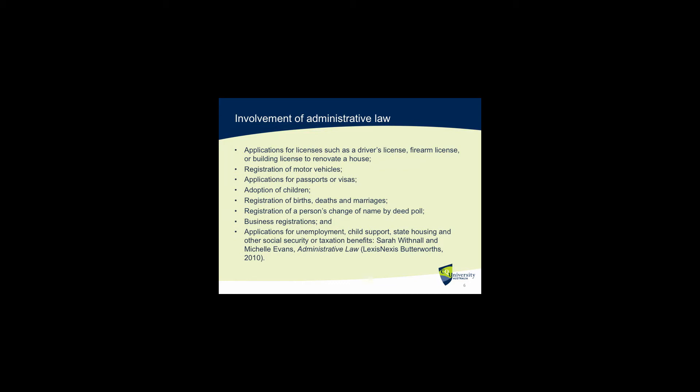It could also be invoked in relation to business registrations, or in terms of applications for unemployment, child support, state housing, and other social security or taxation benefits. In these instances, when the government makes a decision, or fails to make a decision, or the conduct of the executive can be questioned because it fails to follow the rules of natural justice, a person who is aggrieved can invoke administrative law in order to question the decision, non-decision, or even the conduct of the executive government.